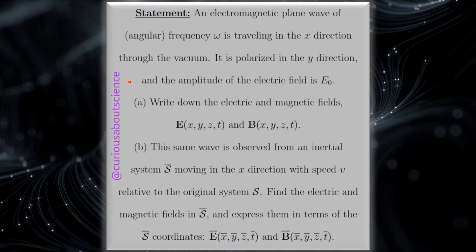The statement reads, an electromagnetic plane wave of angular frequency omega is traveling in the x direction through the vacuum. It is polarized in the y direction, so at least we know what kind of wave it looks like, and the amplitude of the electric field is E0. Now, part A, write down the electric and magnetic fields, E as a function of x, y, z, and t, and B as a function of x, y, z, and t.